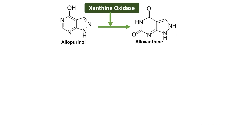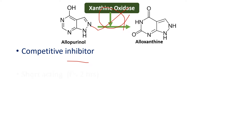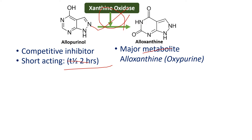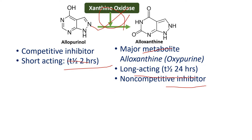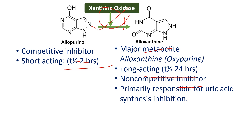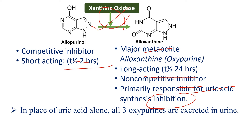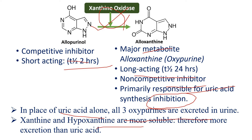Allopurinol is a competitive inhibitor of xanthine oxidase. It is short-acting with a half-life of two hours. Alloxanthine is the major metabolite of allopurinol; it is long-acting with a half-life of 24 hours, is a non-competitive inhibitor, and is primarily responsible for uric acid synthesis inhibition. Instead of uric acid, oxypurines — xanthine and hypoxanthine — are excreted in urine, as they are more water-soluble.